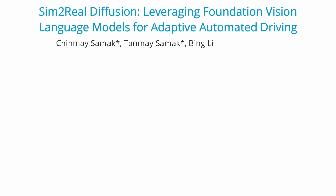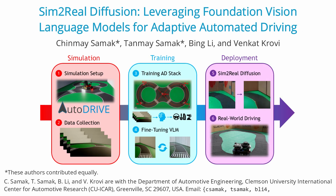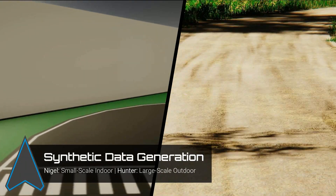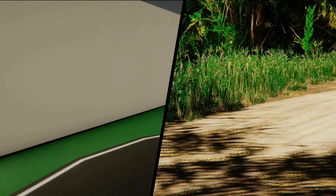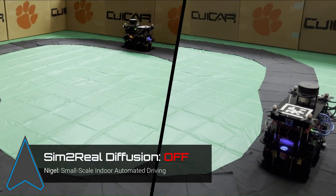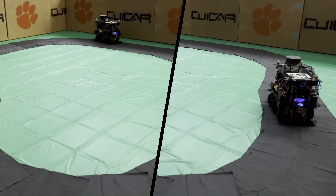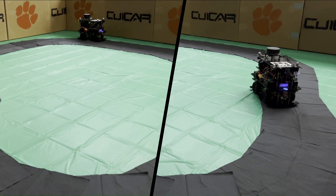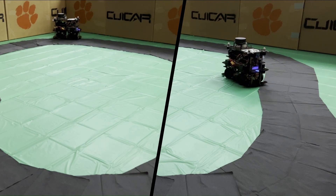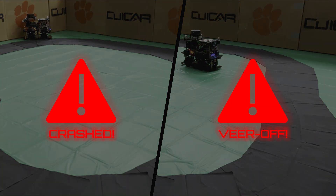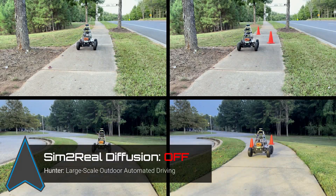In this research, we propose SIM2Real Diffusion, a framework that leverages foundation vision language models for learning cross-domain representations for adaptive automated driving. Many modern autonomy algorithms rely heavily on simulation-based synthetic data, and oftentimes their performance in simulation does not necessarily translate to success in the real world due to the inherent simulation-to-reality gap. Here, we demonstrate a few examples of such cases across different candidate vehicles and algorithms, which serve as the key motivation to tackle this problem.